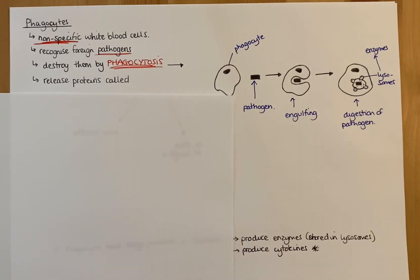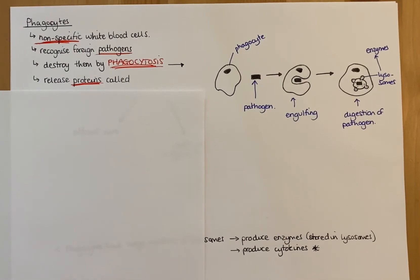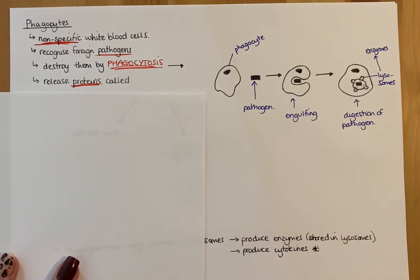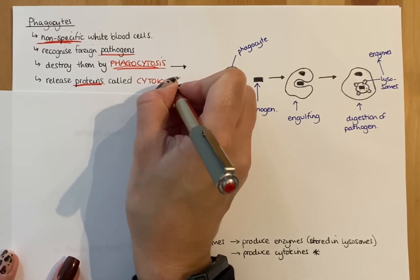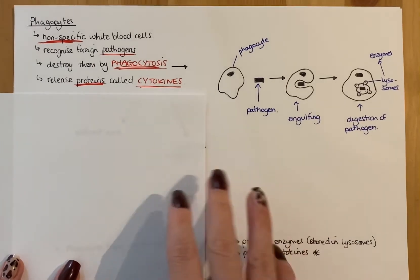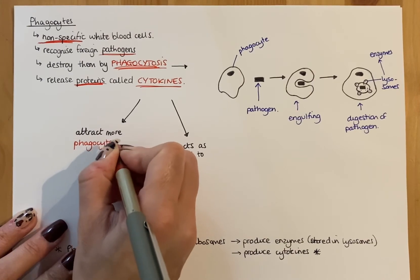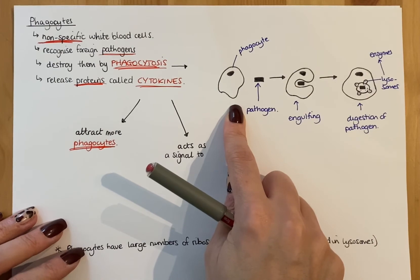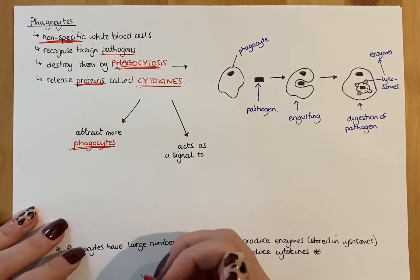As well as phagocytosis, phagocytes also release a particular protein. You may have heard of this especially because of COVID - there's been discussion of cytokine storms, which is why some people can get very ill from infection when their body overreacts. But in a normal immune response, phagocytes release proteins called cytokines. One of the main functions of cytokines is to act as a call to arms - they attract more phagocytes to the infection site.